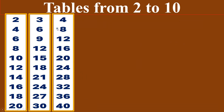Four times table. Four ones are four. Four twos are eight. Four threes are twelve. Four fours are sixteen. Four fives are twenty. Four sixes are twenty-four. Four sevens are twenty-eight. Four eights are thirty-two. Four nines are thirty-six. Four tens are forty.